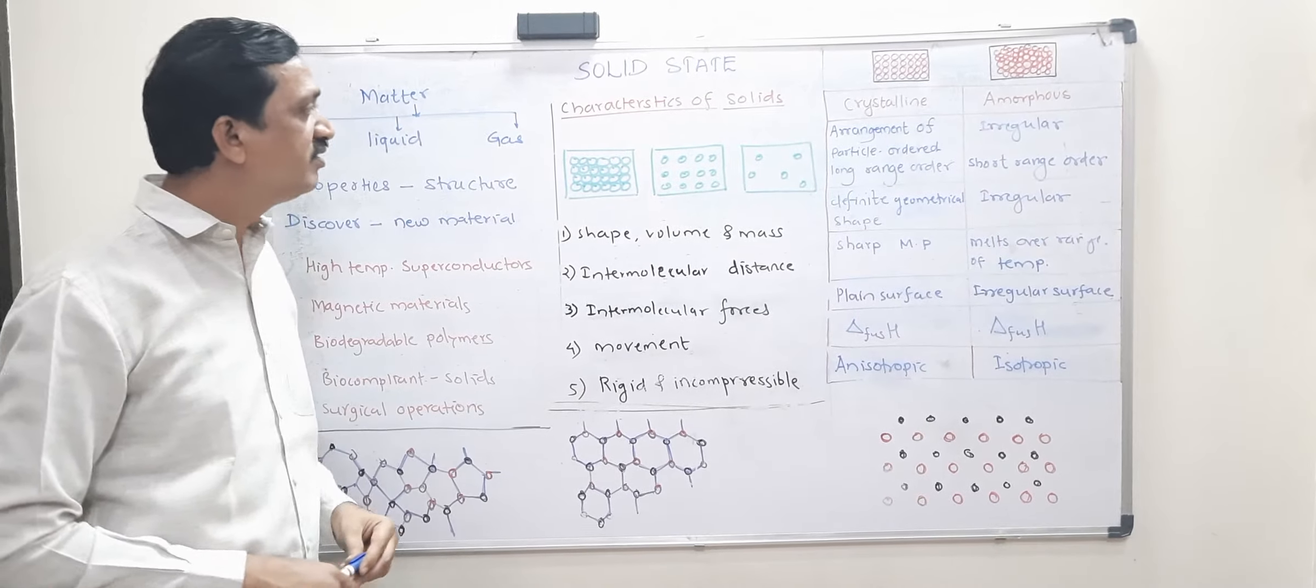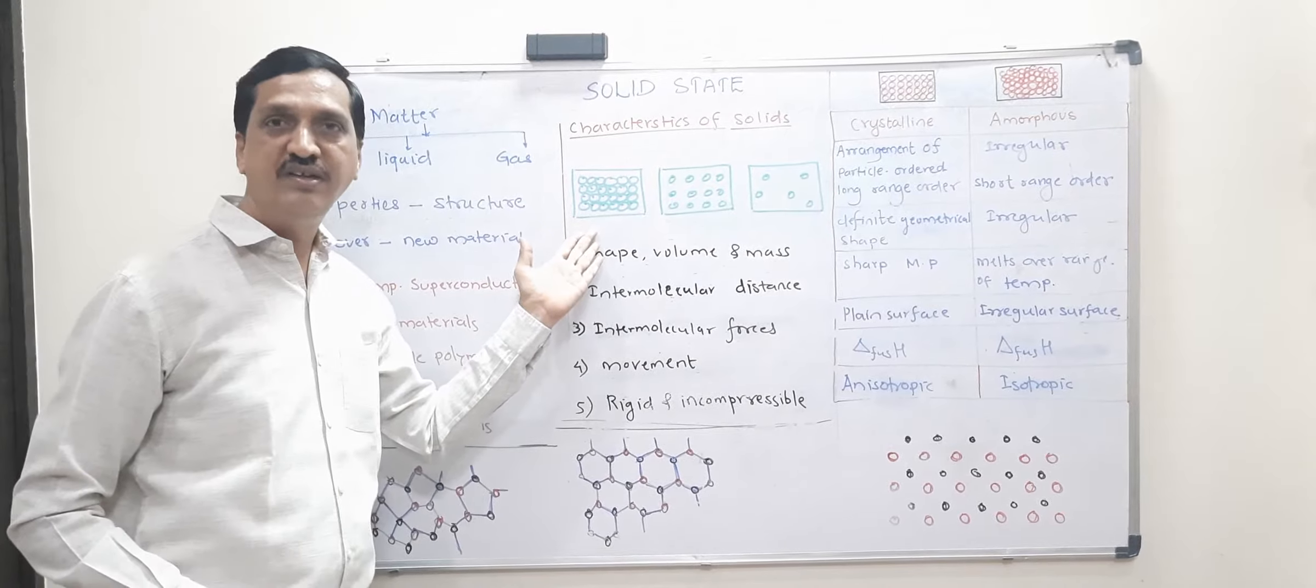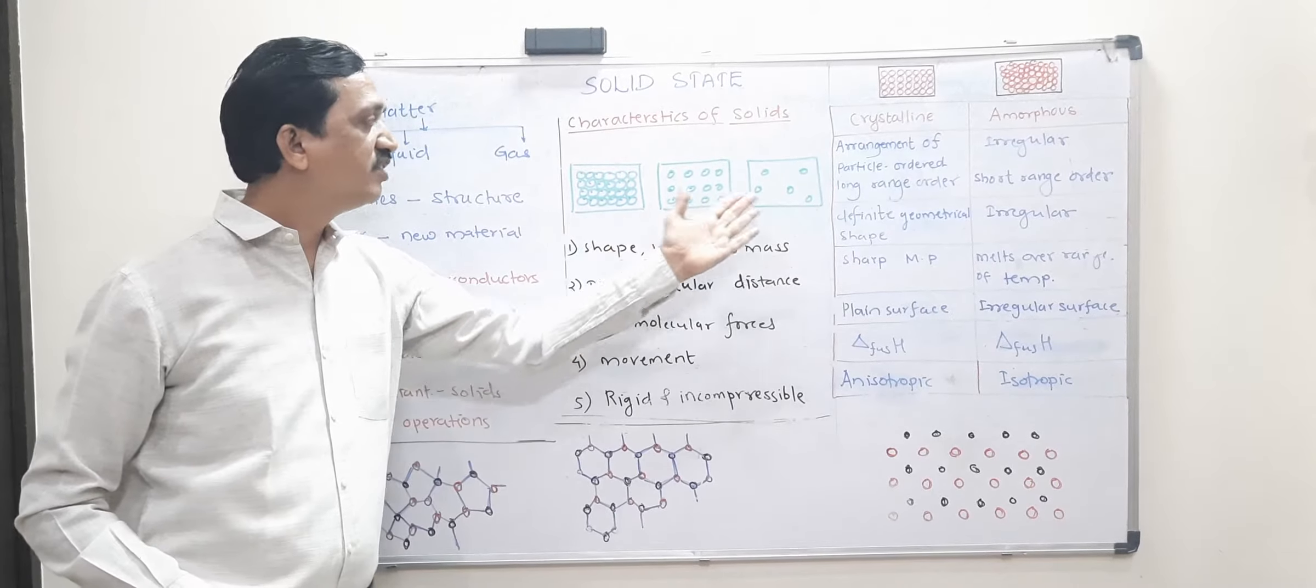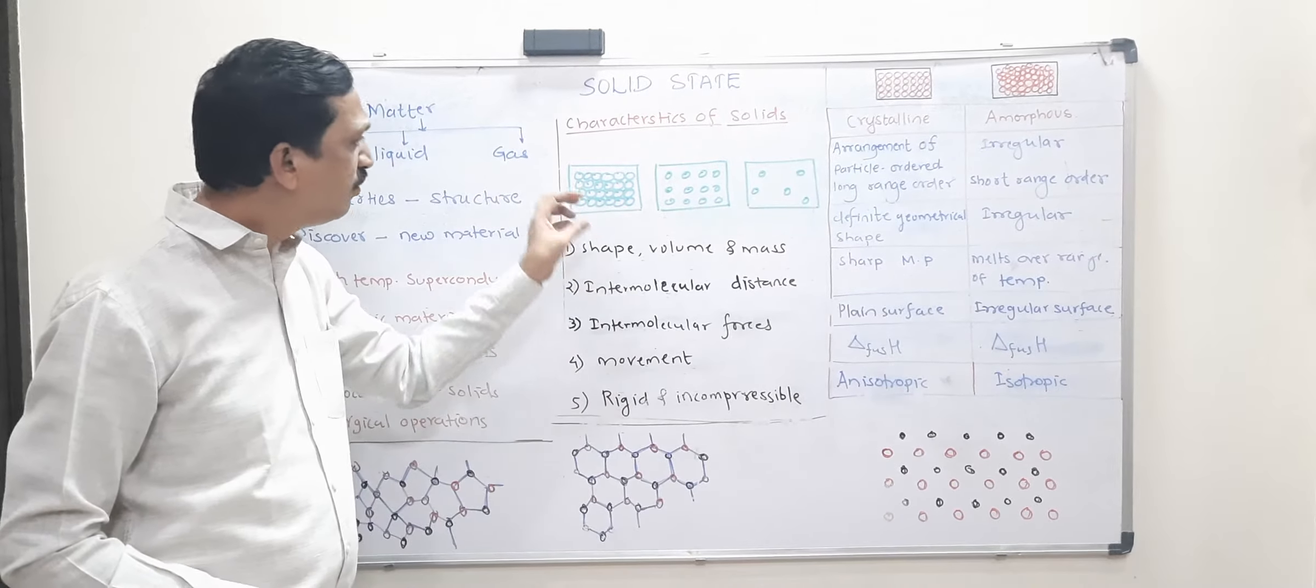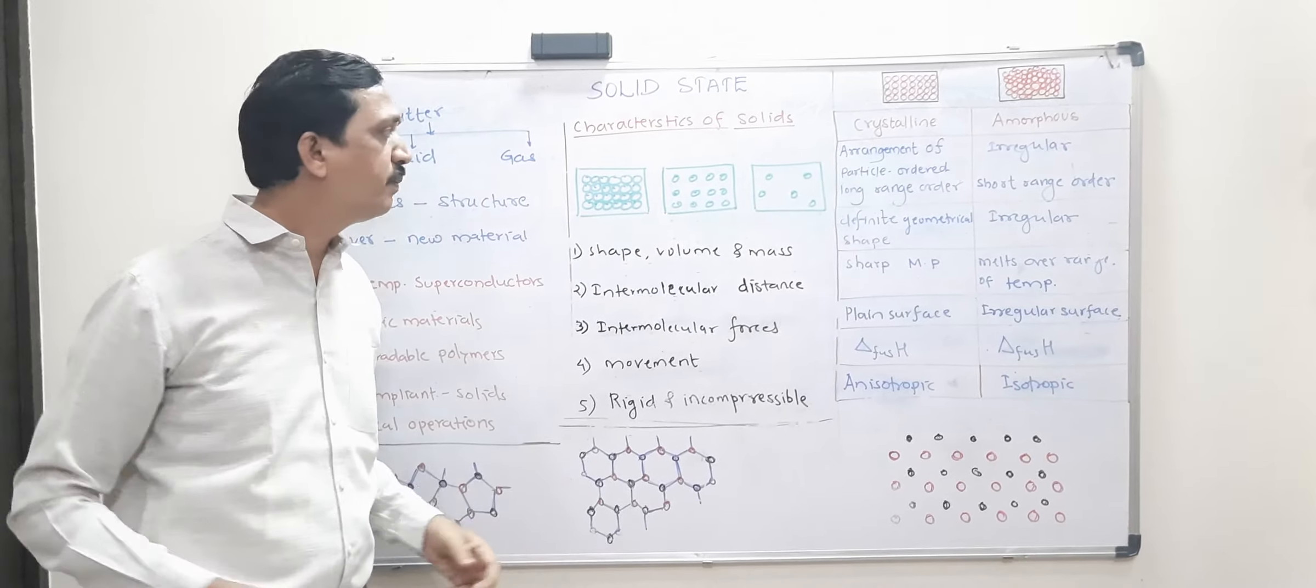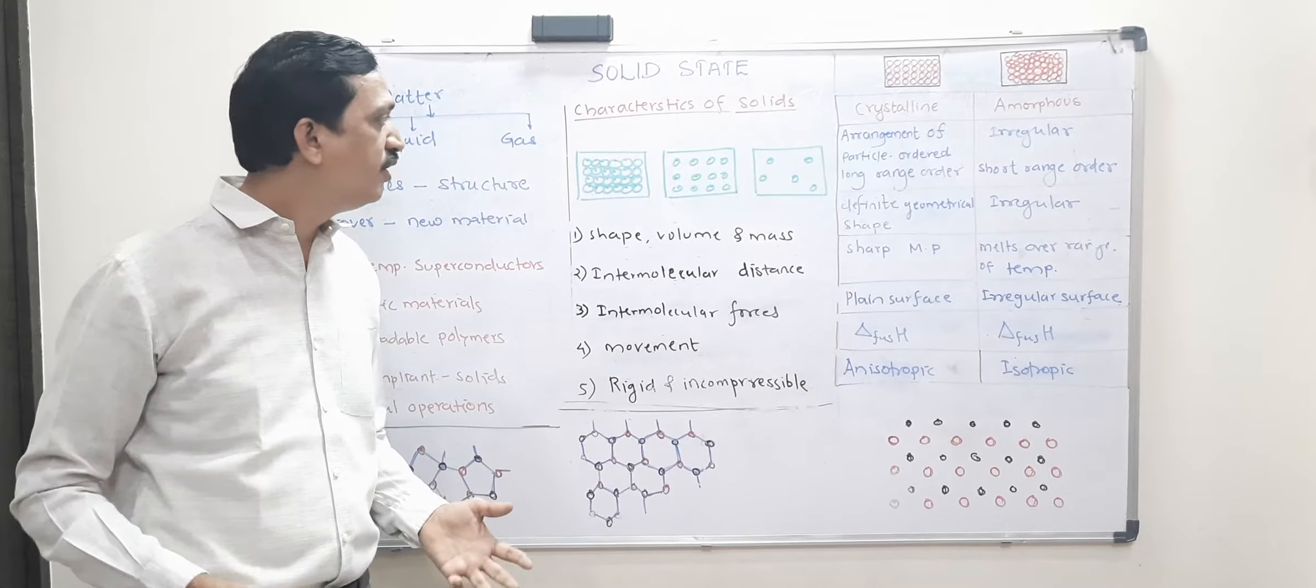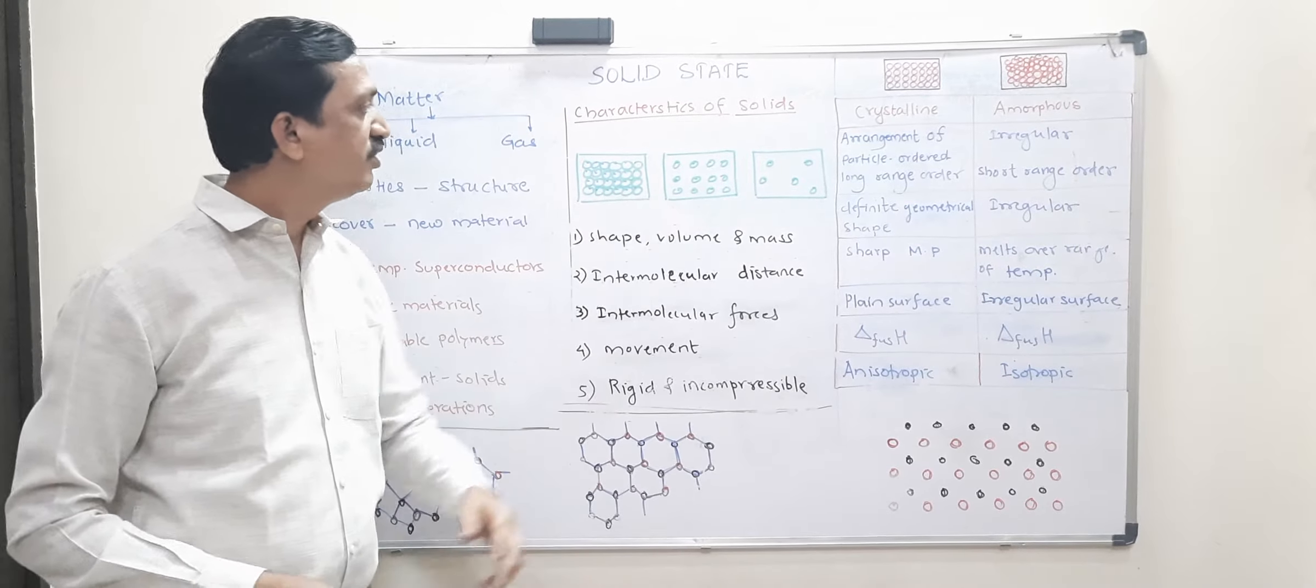So this diagram, you're familiar with this, you're studying since school days, you can make out easily. This is a solid, this is liquid and this one is gaseous. And what are they? They are nothing but the constituent particles and constituent particles could be atom, ion or molecule. So these are the constituent particles.